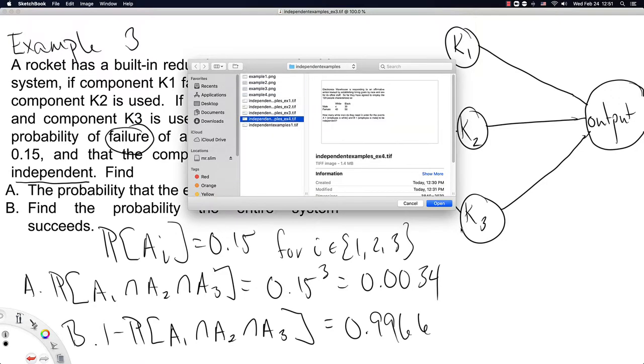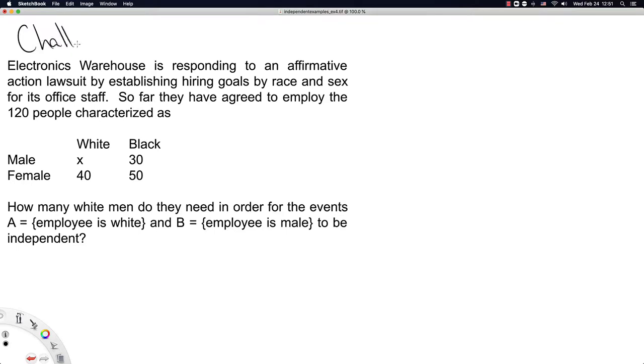So I'll present to you the fourth example, which is to be a challenge problem. And I think my hint is going to be the probability of being male can be calculated as x plus 30 divided by x plus 120. I encourage you to use this calculation in another number of calculations like this in order to ensure that the probability that an employee is white is independent of the probability of an employee is male. I'll leave that for you as a challenge problem. Good luck.